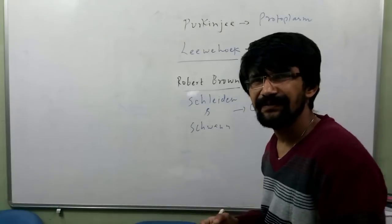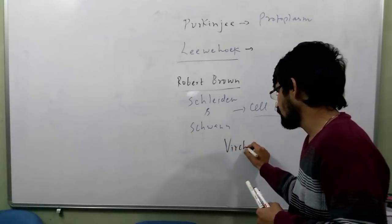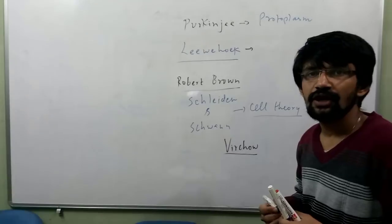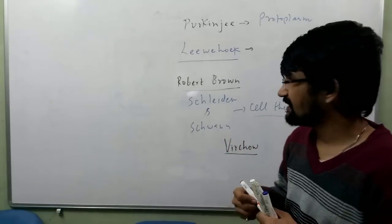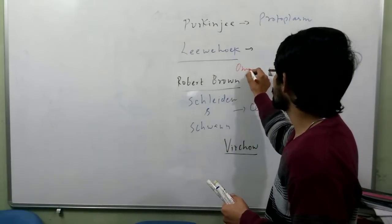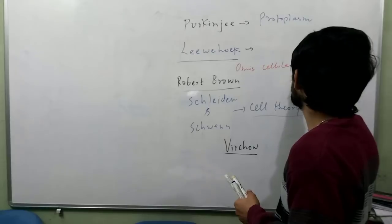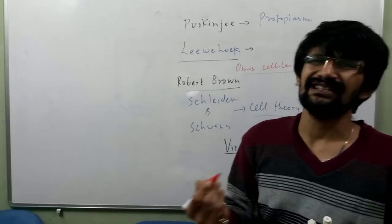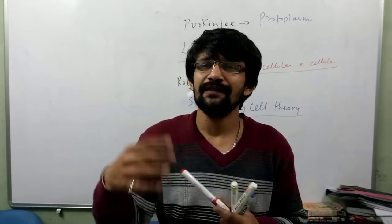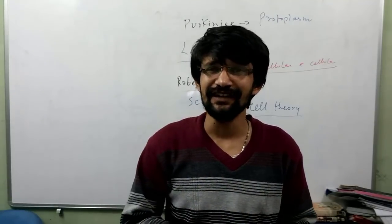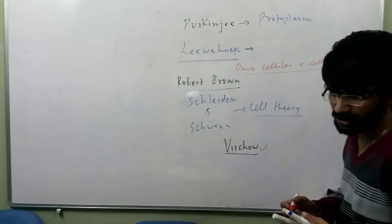The cell theory was expanded by another scientist — this is very important and asked in various competitive examinations — Virchow. Virchow was the one who basically gave something called 'omnis cellula e cellula', which means cells are derived from pre-existing cells. This was another point added to the cell theory by Virchow.